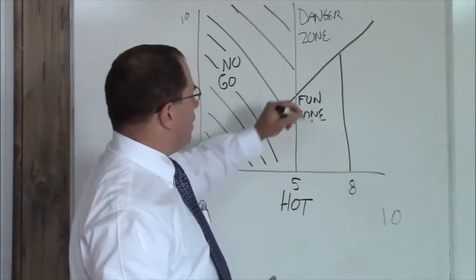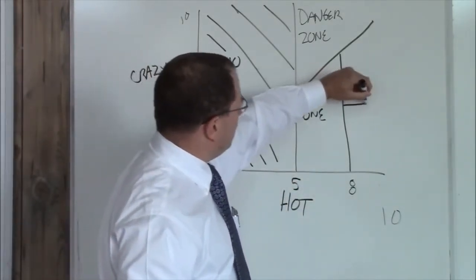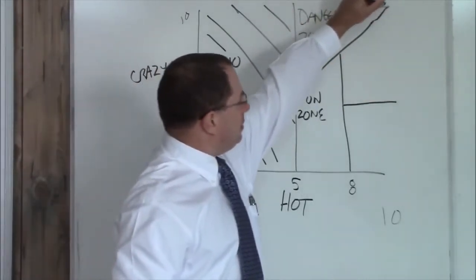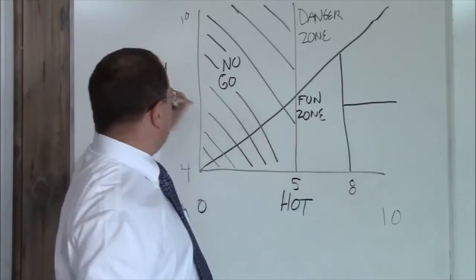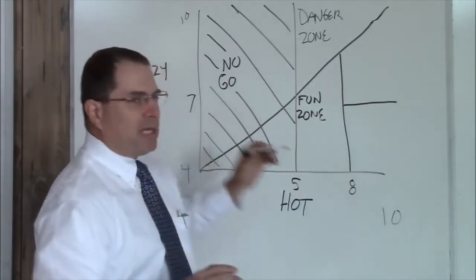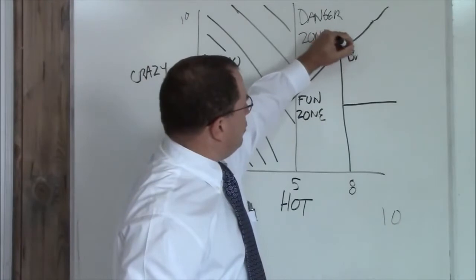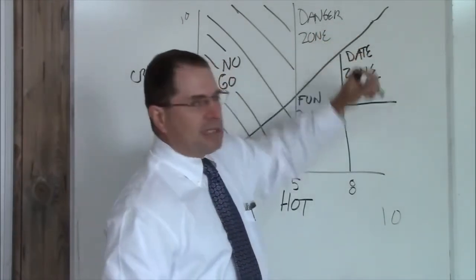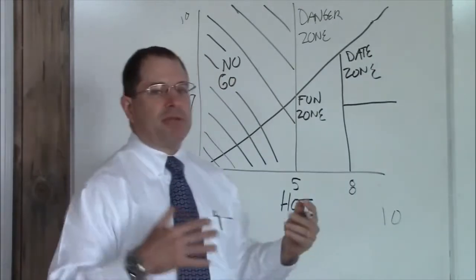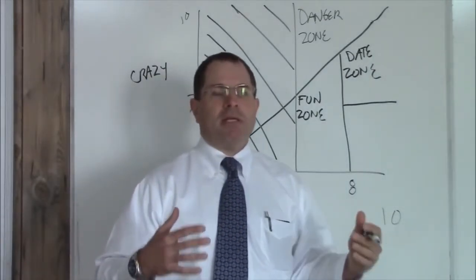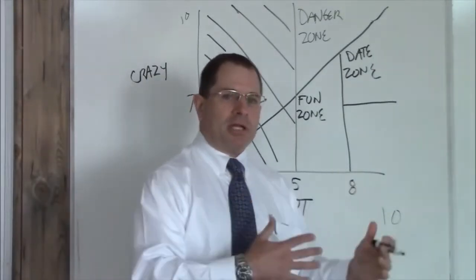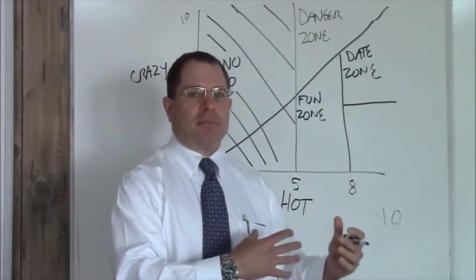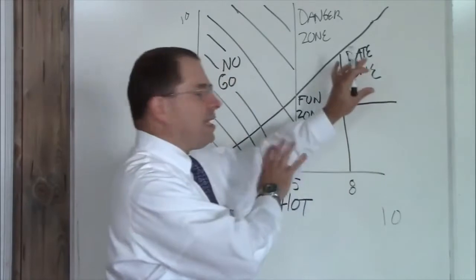Now, moving on, you have this zone here. This is below the crazy line, above an eight hot, but still about a seven crazy. This is your date zone. You can stay in the date zone indefinitely. These are women that you introduce to your friends and your family. They're good looking, and they're reasonably not crazy most of the time. So you can stay here indefinitely.